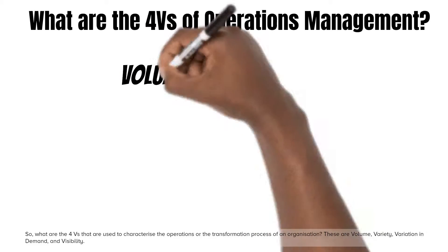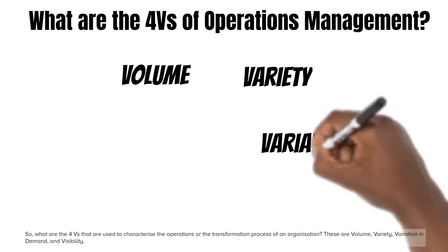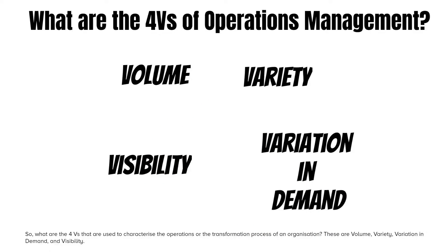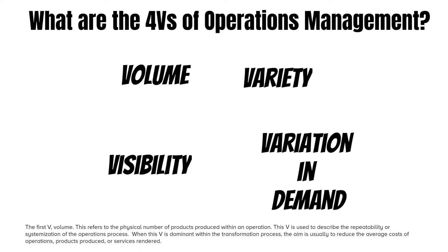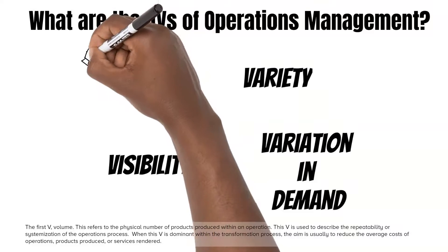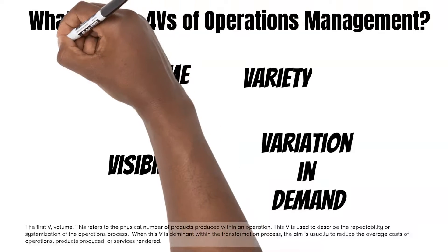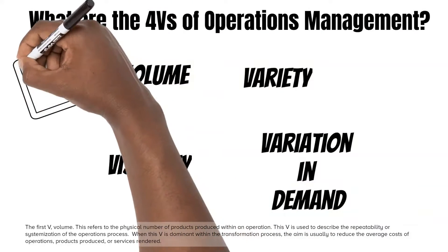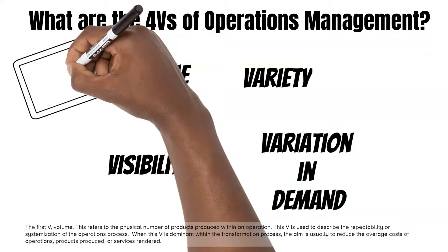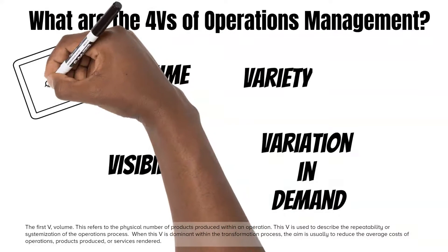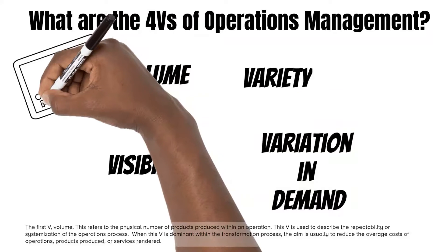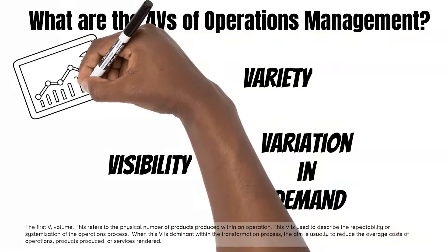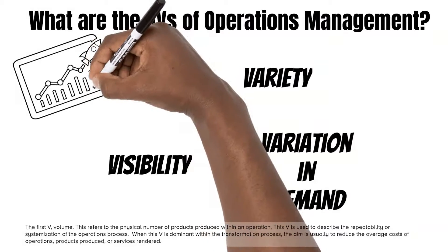These are volume, variety, variation in demand, and visibility. The first V is volume. This refers to the physical number of products produced within an operation. This V is used to describe the repeatability or systemization of the operations process. When this V is dominant within the transformation process, the aim is usually to reduce the average costs of operations, products produced, or services rendered.